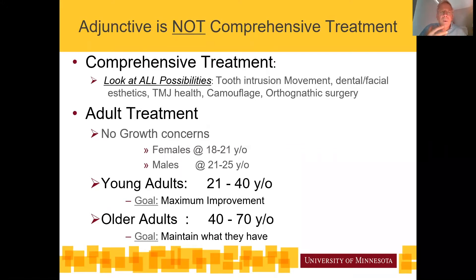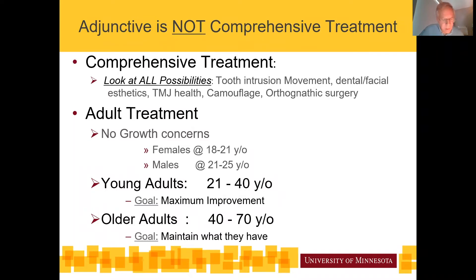It's important to think about what adjunctive treatment is not. It's not going to be comprehensive. I don't feel adjunctive treatment is appropriate as a second stage for TMJ patients trying to fix the bite — that's really comprehensive treatment. Intrusion of teeth is also really comprehensive treatment; it takes a lot of force, biomechanics, and hardware to do well. And if you're doing Invisalign with more than about four millimeters of IPR especially on lower incisors, that's probably in the realm of comprehensive treatment.